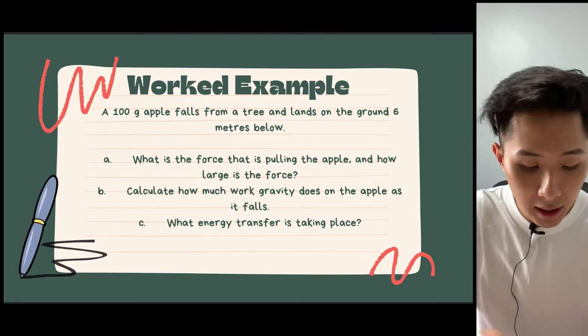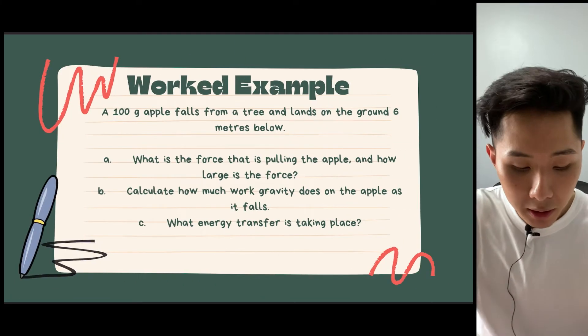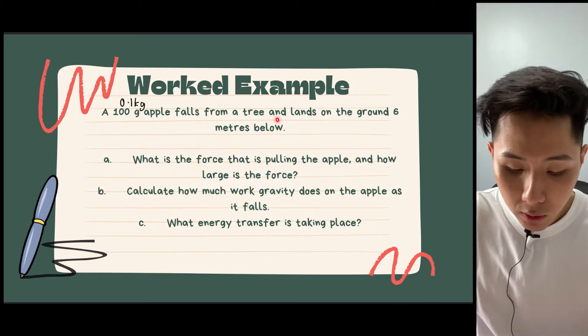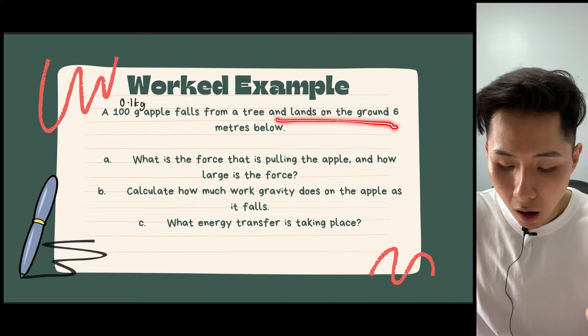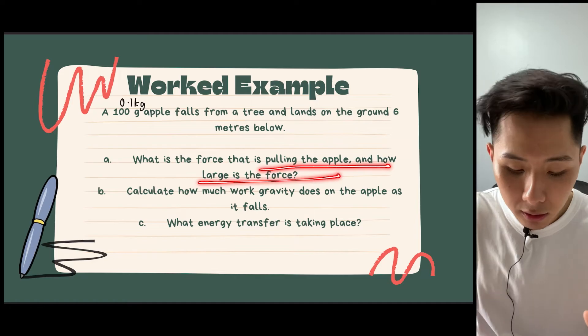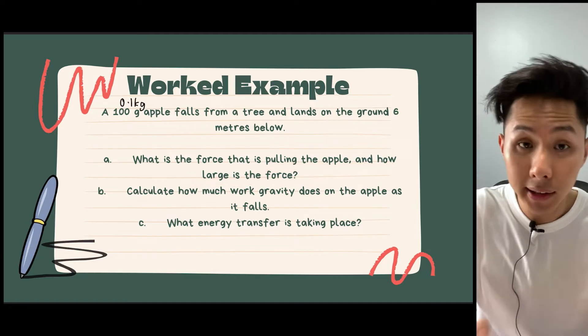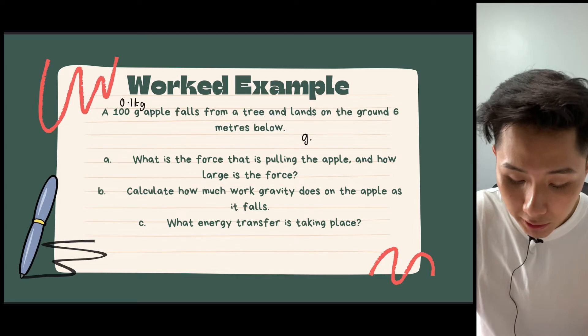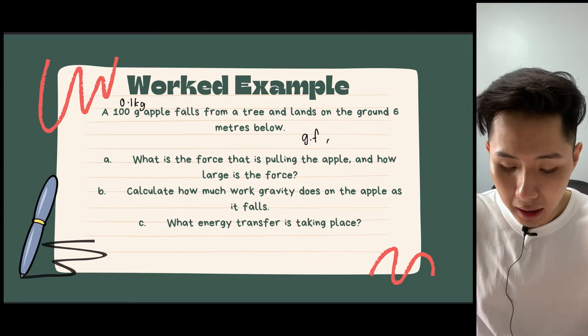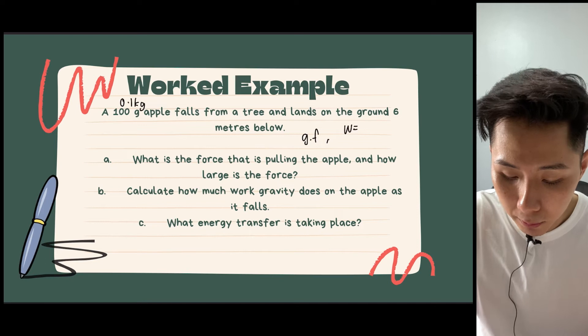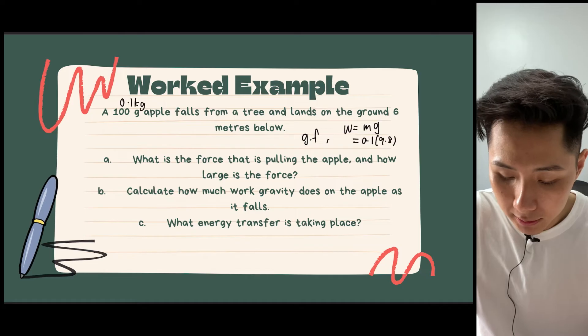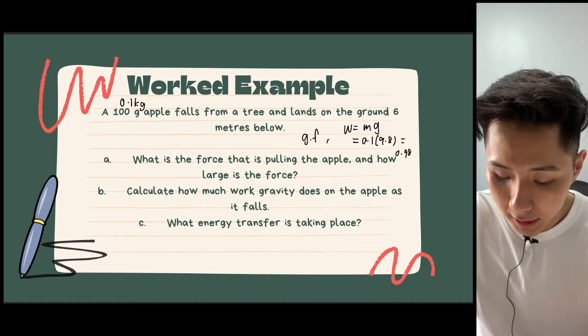So let's move on to another question. A 100 gram apple, I'm going to convert it into kg to make it an SI unit, falls from a tree and lands on the ground 6 meter below. What is the force that is pulling the apple? And how large is the force? The force that is pulling the apple is the gravitational force. And the amount of force that is pulling, we can calculate using W equal to mg, the weight, equal to 0.1 times 9.8, which will get 0.98 Newton.